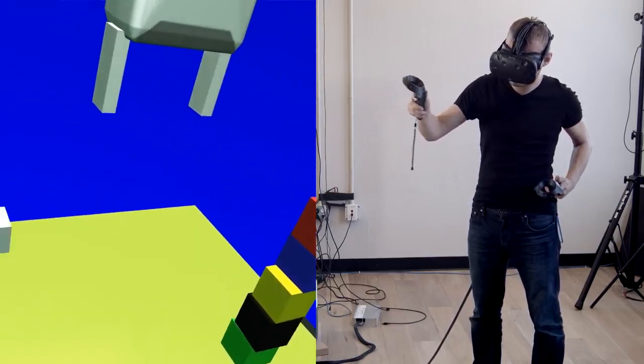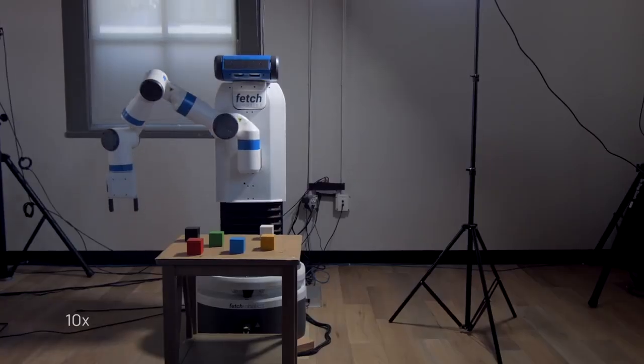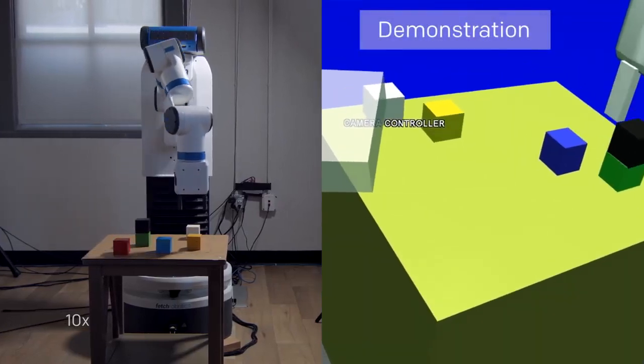Previously, the robot has seen other examples of manipulating blocks, but not this particular one. Our robot has now learned to perform the task even though its movements have to be different from the ones in the demonstration.